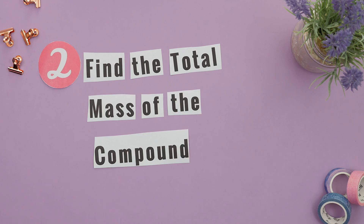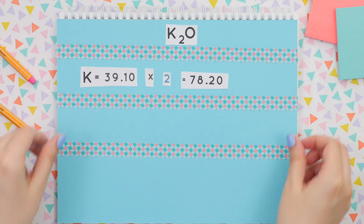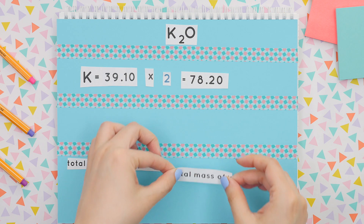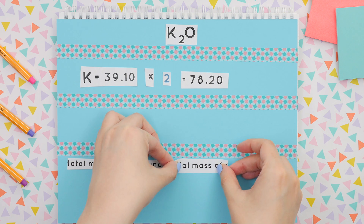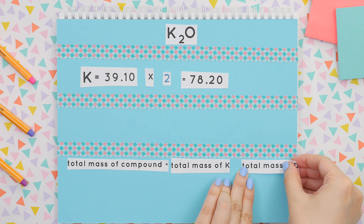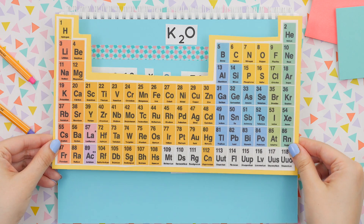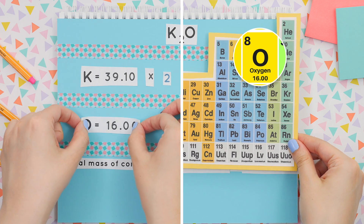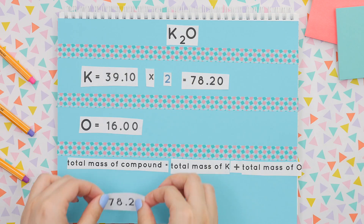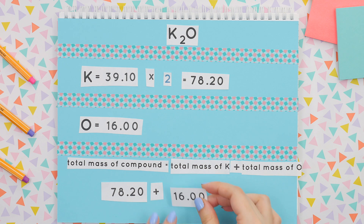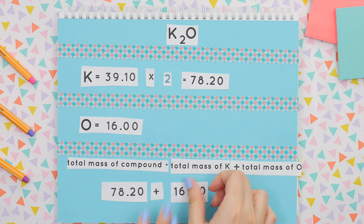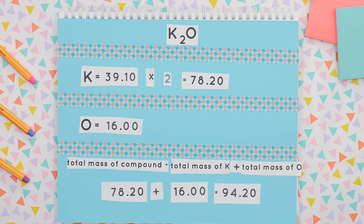Step 2: find the total mass of the compound. To find the total mass of the compound, we need to find each individual mass of each element and add them together. We already found potassium; we now need oxygen's mass. Looking at our periodic table, oxygen's mass is 16.00. So we will add the total mass of each element together to get our total mass of the compound.